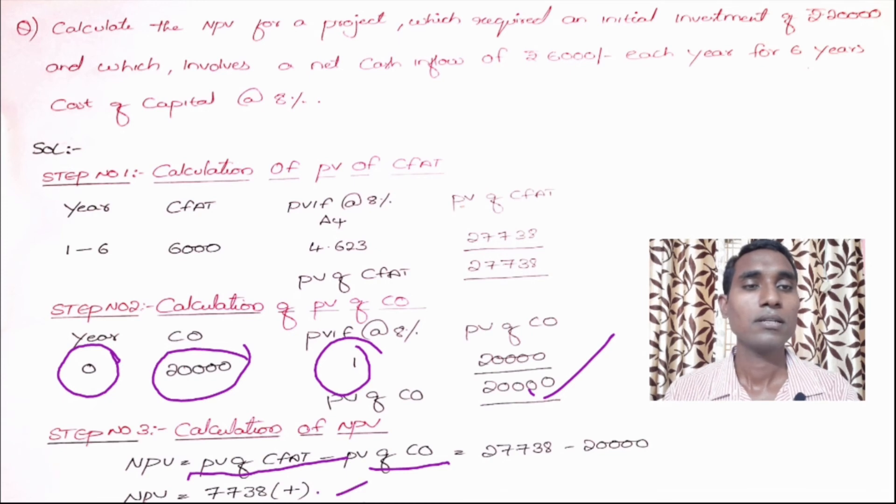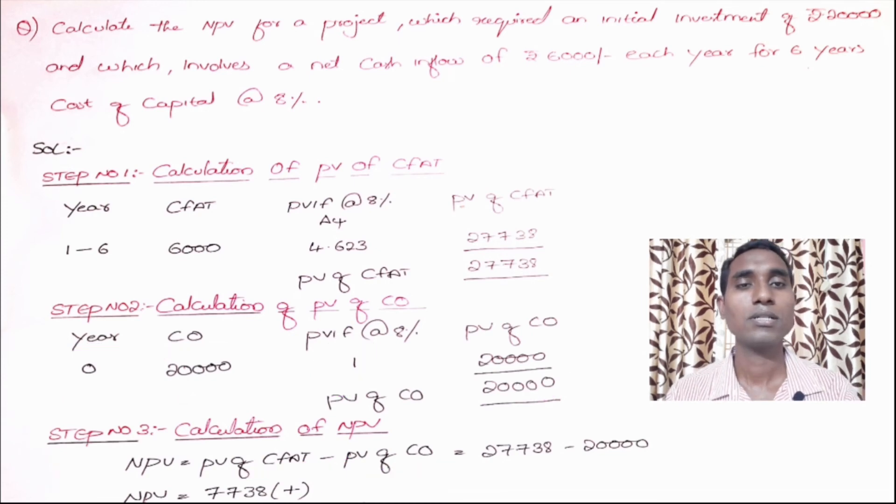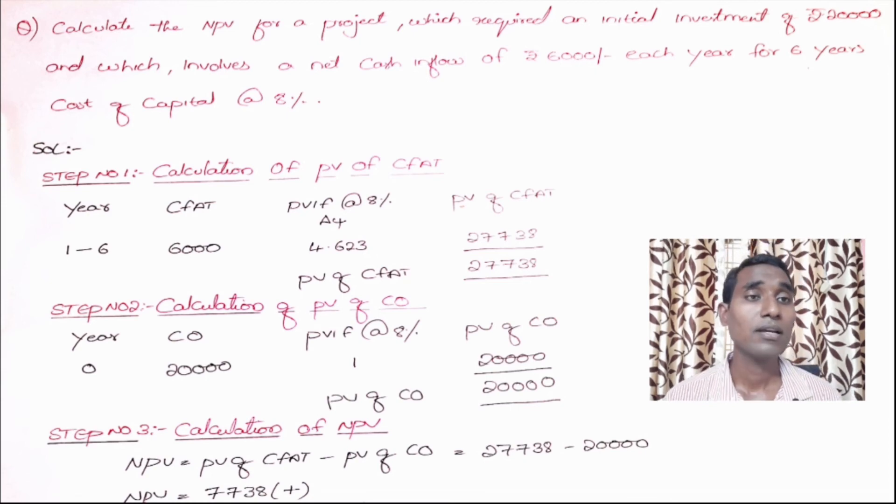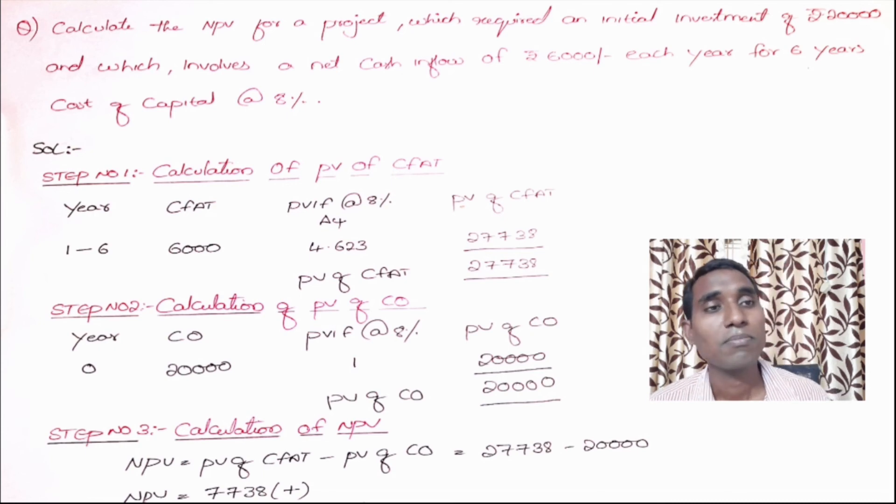It is a simple method, but you can use this method only when your cash inflows are constant. Only step number one will be different. You can compute easily within five to six minutes. I thought of bringing in this question so that you understand and if in the exams by chance this question appears, you can use this method to solve the NPV.